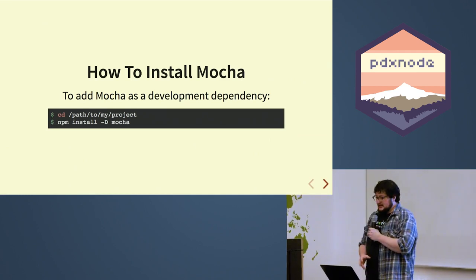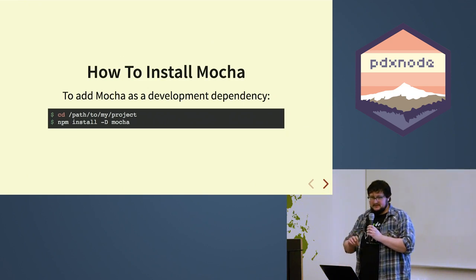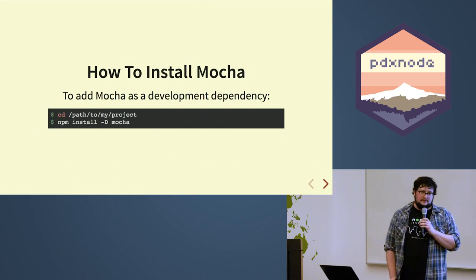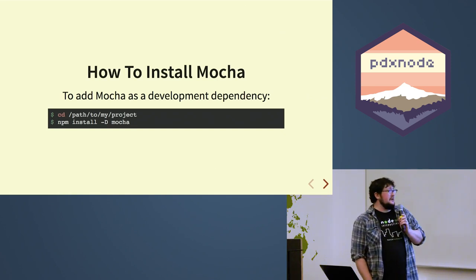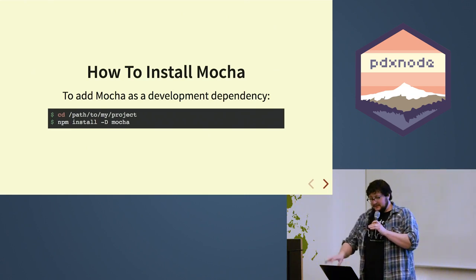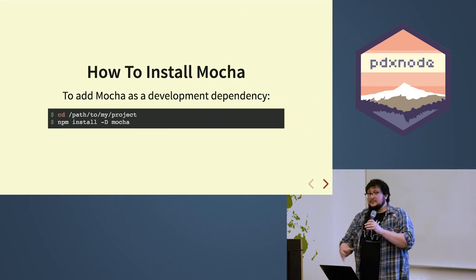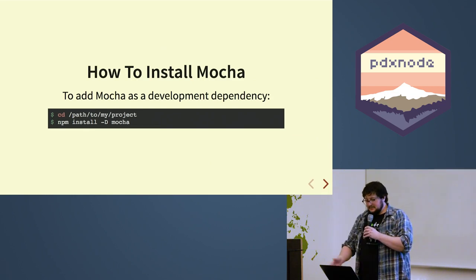What happens when you install Mocha? Mocha is added to your manifest — package.json — in the devDependencies property. It also gives you the Mocha executable, which lives in your local node_modules in the .bin folder. You get a Mocha executable, it's in your manifest, and next time you run npm install you'll get Mocha.